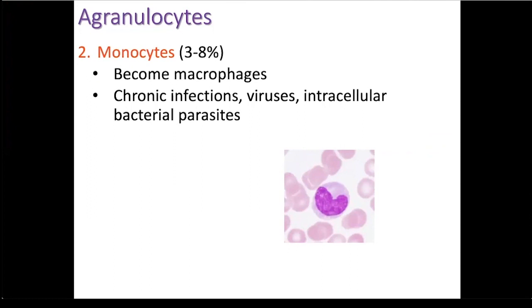Examples of these types of infections would be mononucleosis, as well as TB. Their nucleus is shaped like a kidney or U-shaped.